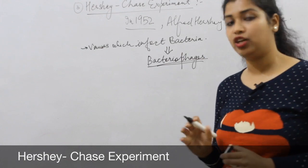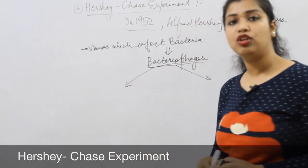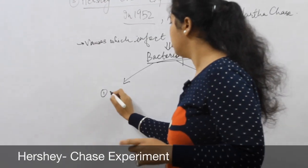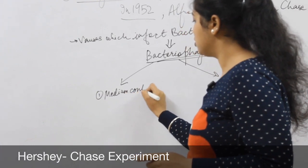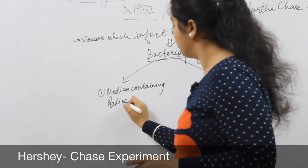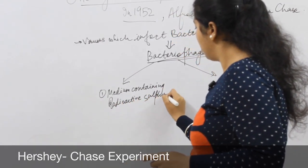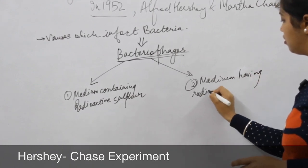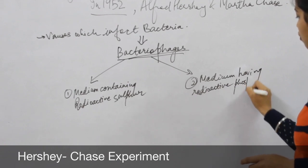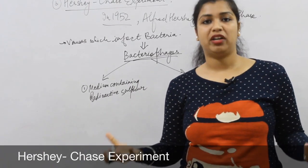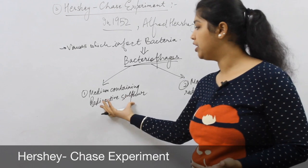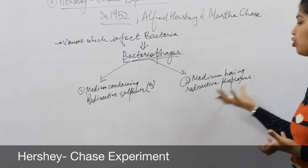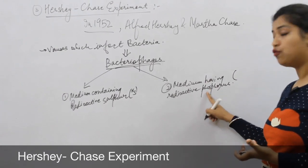First of all, they grew the bacteriophages on two different media. Unhone do alag alag medium mein bacteriophages ko grow karvaaya. The first medium was having radioactive sulphur (S35), and the other medium was having radioactive phosphorus (P32). So unhone bacteriophages ko do batch mein divide kiya — aadhe ko S35 medium pe aur aadhe ko P32 medium pe grow karvaaya.